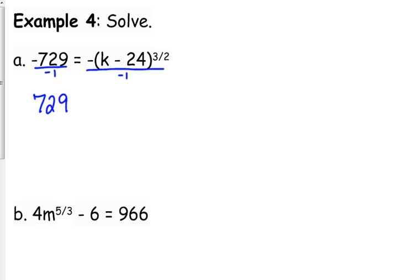So 729 equals k minus 24 to the 3 over 2. We need to raise both sides to the 2 over 3.